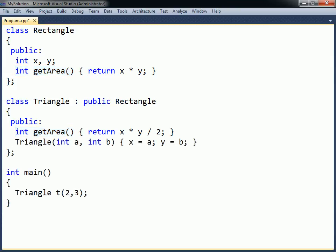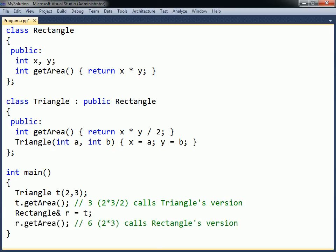If a triangle object is created and the getArea method is invoked, then Triangle's version of the method will get called. However, if the triangle is upcast to a Rectangle, then Rectangle's version will get called instead.